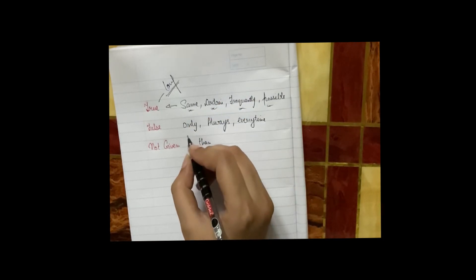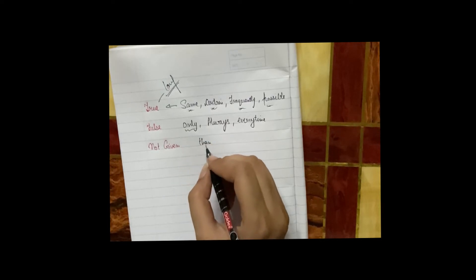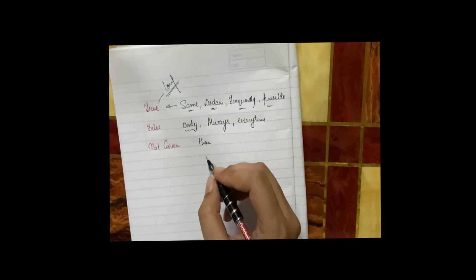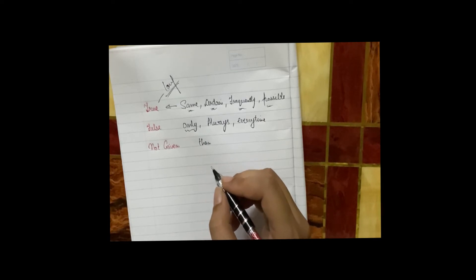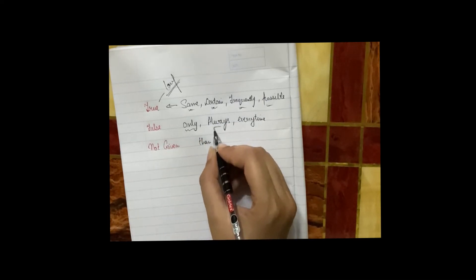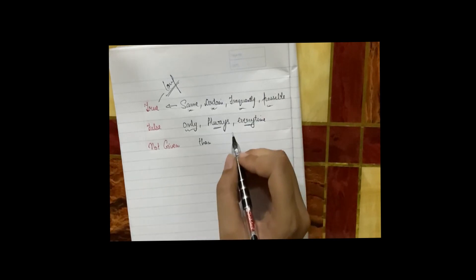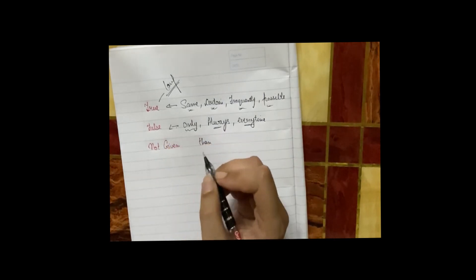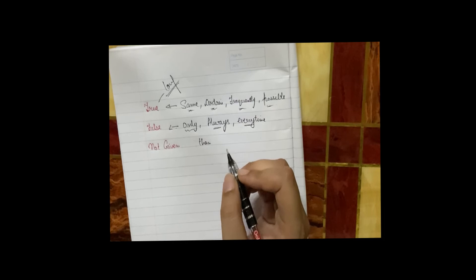Next one coming on false. If 'only' appears in a long sentence, the answer is false at that time. 'Always', 'every time' - in this case the answer will be false. So in this case scenario, the answer would be false.